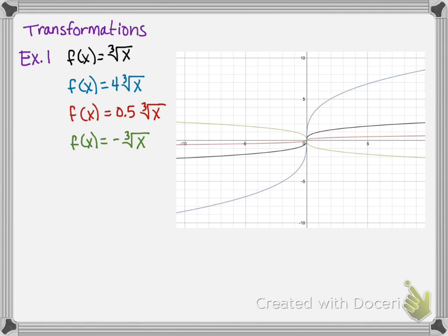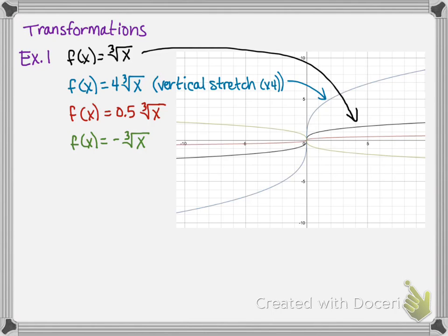The parent function, f of x equals the cube root of x, is the black graph. f of x equals 4 times the cube root of x is a vertical stretch by a factor of 4. f of x equals 0.5 times the cube root of x is a vertical compression.